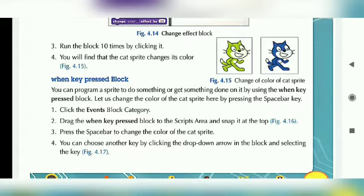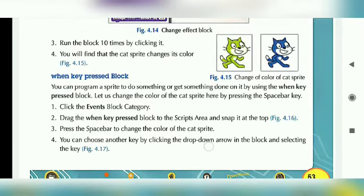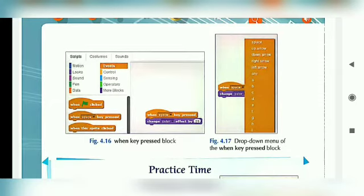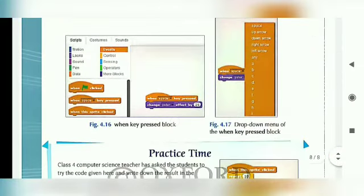अब है 'When Key Press' block। You can program a sprite to do something or get something done on it by using the 'When Key Press' block. Let us change the color of the cat sprite by pressing the space bar key. Step 1: Click the Events Block Category. Step 2: Drag the 'When Key Press' block to the Script Area and snap it at the top — Figure 4.16। बच्चे page number 54 में Figure 4.16 देखेंगे। Events पर click करने पर 'When Key Press' block का option आता है, जिसे हम Script area में drag करेंगे।